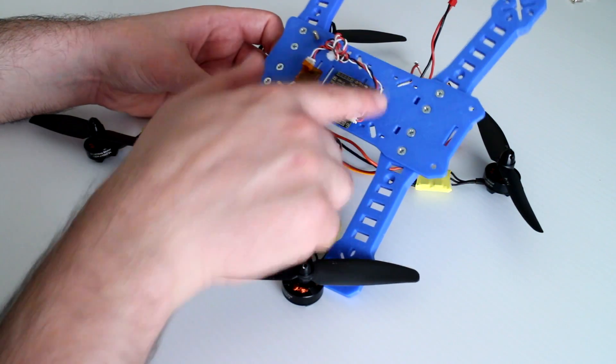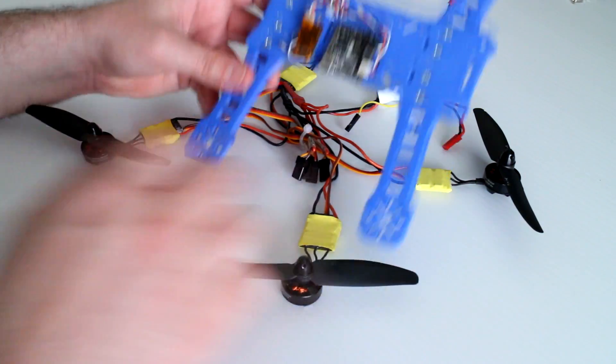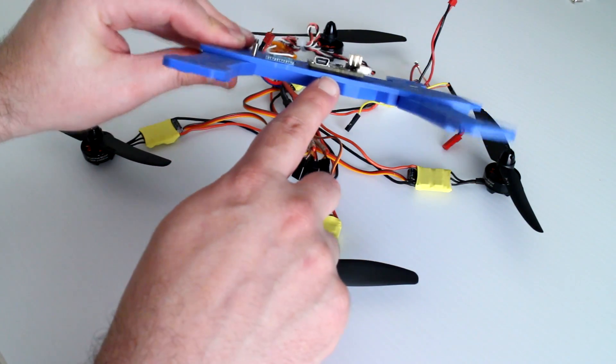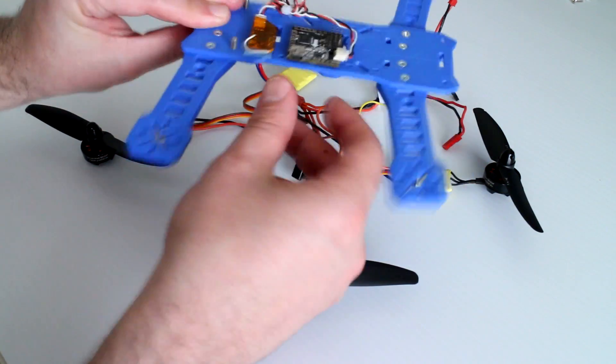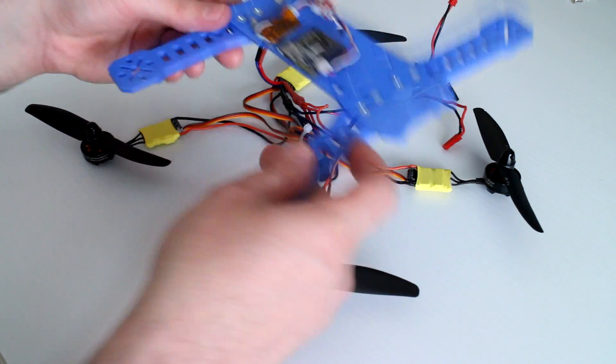I'm not able to use the mounting holes on this chassis as the NanoWii doesn't come with any mounting holes. So all I've done here is just use some double-sided foam tape to simply secure the flight controller to the chassis which hopefully will provide some vibration dampening as well.